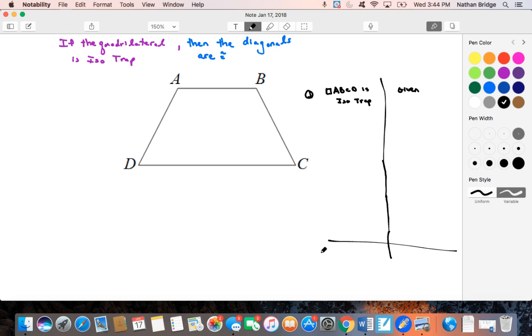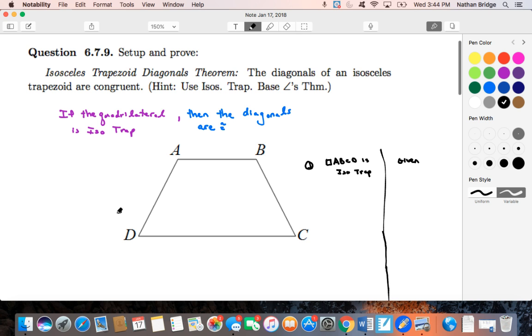then what we're trying to prove that, let's see here, the diagonals, so let's draw in those diagonals to see what exactly it is that we're talking about here. We're talking about the diagonals, B, D, and A, C.